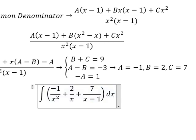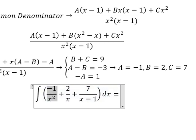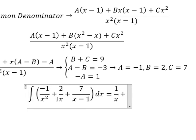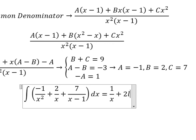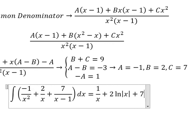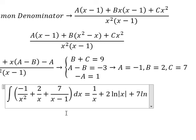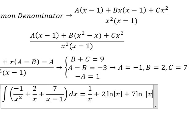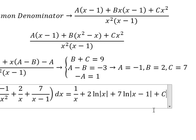And now we have the final answer. The integration of negative number 1 over x², we have 1 over x. This one we have number 2, ln of the absolute value of x. And the next one, ln of the absolute value of x minus 1. And I will put about C.